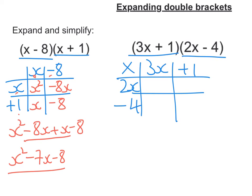And we're going to multiply them. So we're going to get 3x times 2x is 6x squared. 2x times 1 is 2x. 3x times negative 4 is negative 12x. And negative 4 times 1 is negative 4.